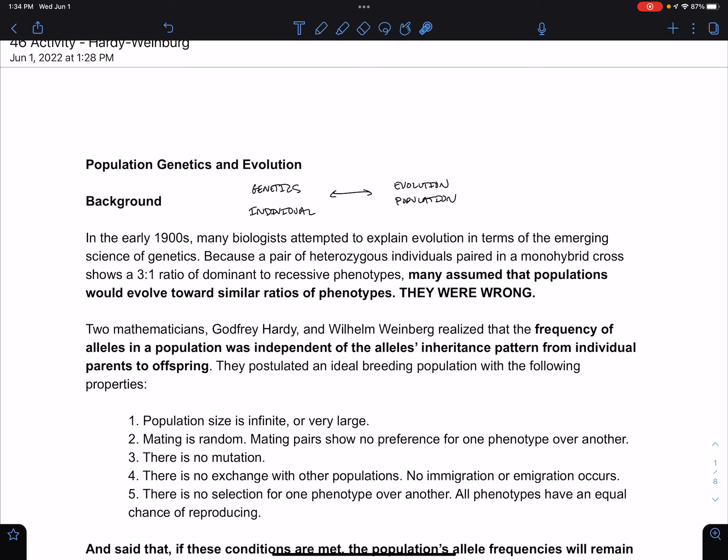We are going to explain evolution in terms of the emergent science of genetics, but I want to talk a little bit about a common misconception among students. If we have heterozygous individuals, so we have little a, big A, cross with little a, big A, we'll see a 3 to 1 ratio of offspring dominant to recessive.